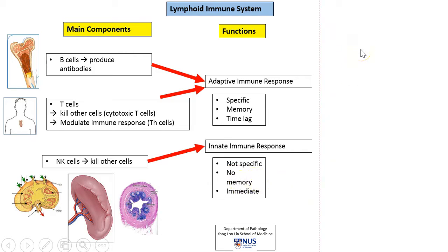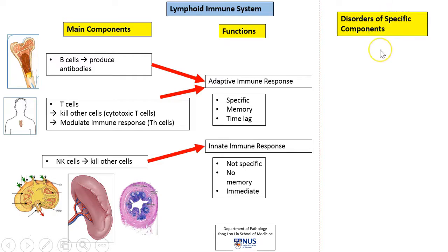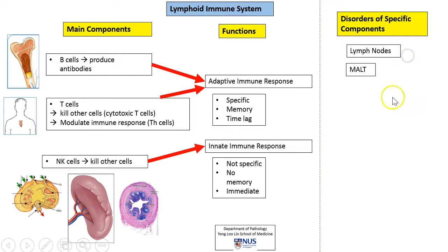Moving on to the pathology of these tissues, we can look at pathology in terms of specific components, organized by tissue type. Lymph nodes, for example, can have benign conditions like reactive lymphoid hyperplasia, or malignant conditions such as secondary malignancies or primary malignancies known as lymphoma. There can also be disorders of the MALT — mucosa-associated lymphoid tissue, as seen here in the appendix — and these can be hyperplastic and reactive, or neoplastic and lymphomatous.